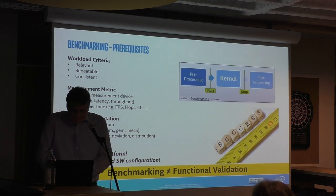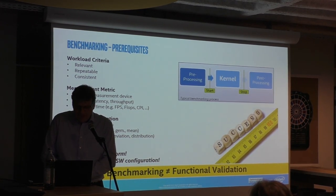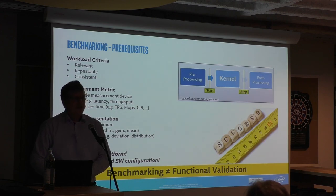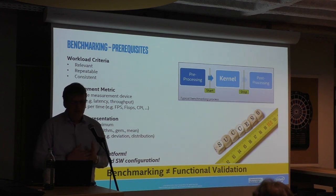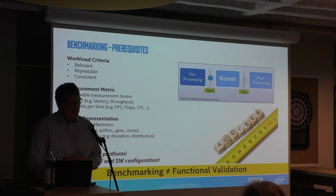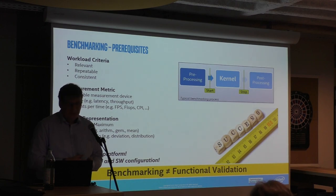Benchmarking — a quick one. When I talk to folks on software optimization, we often first have to figure out what to look at. When you have your application, there are probably one or multiple pieces inside it which we call a kernel — your main piece of code of interest for software optimization. Then you have pre- and post-processing steps which you do not care about. What you need to agree on first is: what is actually my kernel? What is my main function of interest? It sounds easy, but it's actually not. Your workload has to be relevant, repeatable, and consistent — easy to say, hard to do.